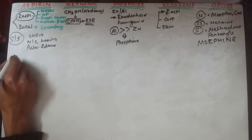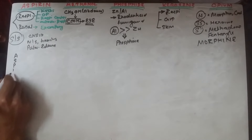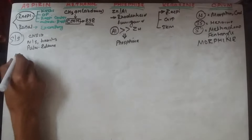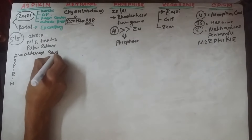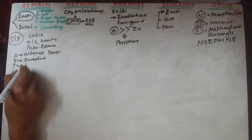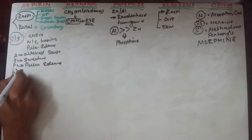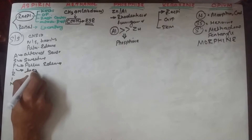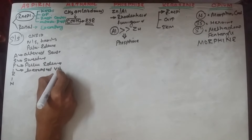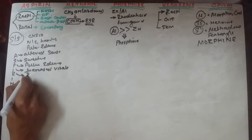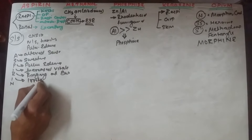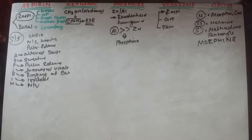A simple mnemonic for remembering clinical features of aspirin poisoning is 'ASPIRIN': A = Altered sensorium, S = Sweating, P = Pulmonary edema, I = Increased vitals (blood pressure, respiratory rate, heart rate), R = Ringing of ears (tinnitus), I = Irritability, N = Nausea and vomiting.